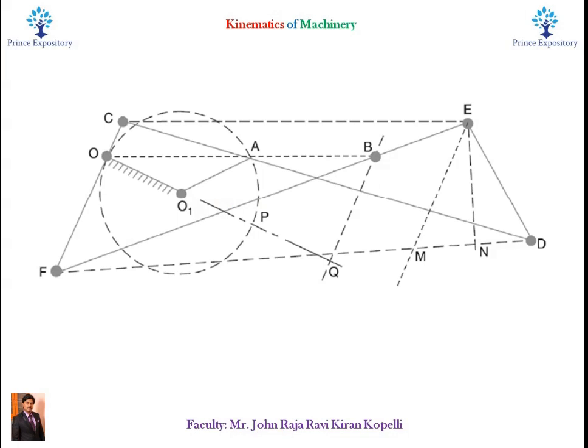Now let us see the figure very carefully. It consists of a fixed link O-O1 and other straight links O1-A, F-C, C-D, C-E, and E-F, and are connected by turning pairs at their points of intersection. From the figure, the links F-C and C-E are equal in length, and the links C-D and E-F are also equal in their lengths.